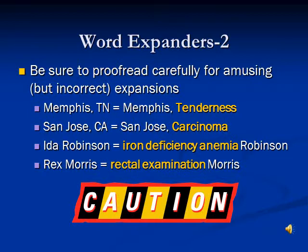Ida Robinson — a name, obviously Ida — it's not 'iron deficiency anemia Robinson.' And look at poor Rex Morris here, how he expands out. That's not good. So we need to be aware, if we do use word expanders, that we really have to be on high alert about these letters expanding out.